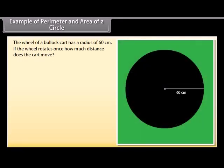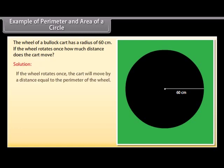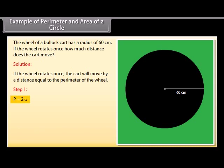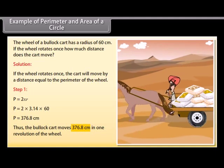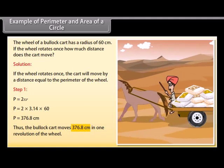Example 3: The wheel of a bullock cart has a radius of 60 centimeters. If the wheel rotates once, how much distance does the cart move? If the wheel rotates once, the cart moves a distance equal to the perimeter of the wheel. Using P equals 2πr and substituting the values, P equals 376.8 centimeters. Thus the bullock cart moves 376.8 centimeters in one revolution of the wheel.